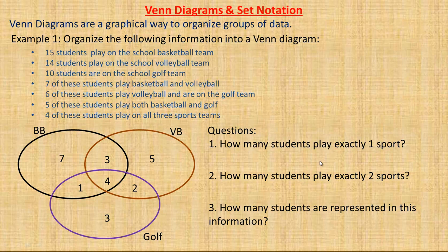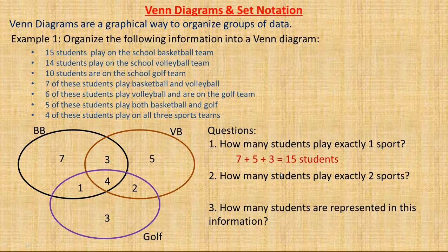We have three questions to answer about this Venn diagram. How many students play exactly one sport? The exactly-one-sport students are those only in one oval: the seven on basketball only, the five on volleyball only, and the three on golf only. Adding five, three, and seven gives 15 students that play exactly one sport.